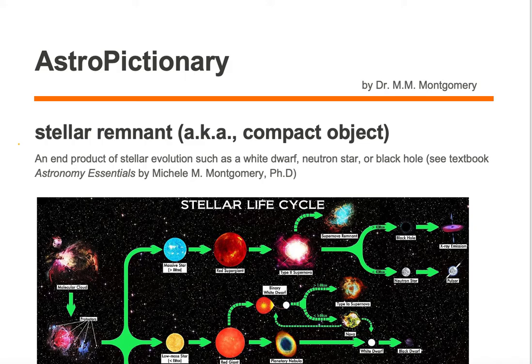A stellar remnant is also known as a compact object. It is an end product of stellar evolution such as a white dwarf, neutron star, or black hole.